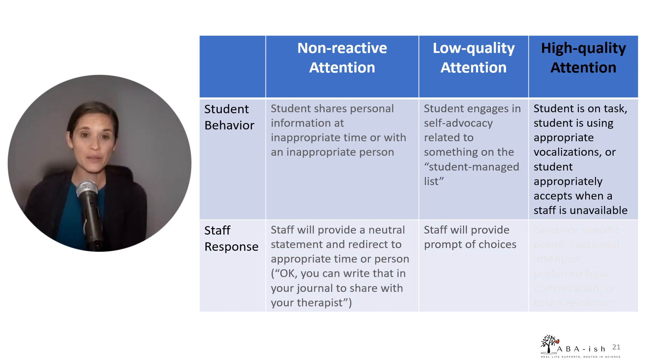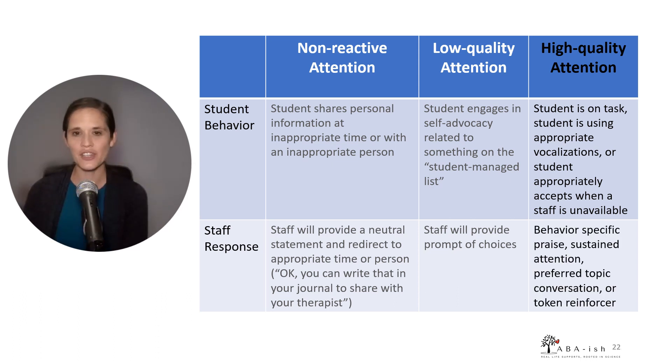Finally, we had the situation in which we were reinforcing that alternative behavior, the thing we really wanted to see more of, so we're going to give this our high quality attention. For this student, it was the student being on task, being appropriate with their vocalizations, or the student appropriately accepting when a staff member was unavailable. So in that example of when a student asked to see the nurse, if we say, hey, the nurse is not available right now, the student says, okay, and moves on, that would be a time that we would want staff responding with high quality attention. For this student, that looked like things such as behavior-specific praise, giving sustained, so longer durations of attention than they gave in the other two categories. They might talk about a preferred topic or have a preferred conversation. And then we also included token reinforcers for this student in this high quality attention.